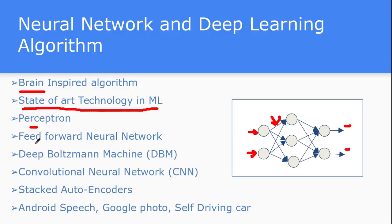There is the perceptron and feed-forward neural network. There are others like radial basis neural network and Hopfield neural network. In the current state of the art, deep learning is another subfield of this neural network field. It has become prominent because it has almost overtaken the error rate compared to other learning algorithms. These include deep Boltzmann machines, convolutional neural networks — mostly used for image classification and image recognition — and stacked autoencoders.